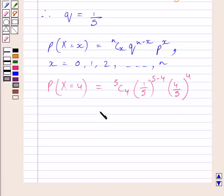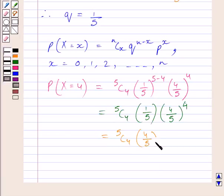This is further equal to 5C4, 1 upon 5 multiplied by 4 upon 5 raised to the power 4. We can write it as 5C4, 4 upon 5 raised to the power 4, multiplied by 1 upon 5.